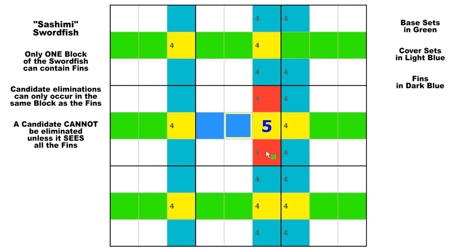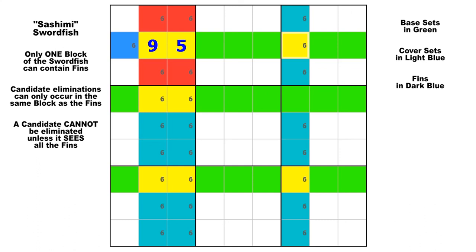Now let me show you another rare case. Just like with a finned swordfish, if two of the cover sets lie in one chute and you've got two base candidates missing from one block, this still works as a sashimi swordfish. There can be one fin in row 2, column 1 and up to four eliminations in this case. The four candidate 6s in the red colored cells would be false because if the fin were not there, this would be a naked single over in row 2, column 7, and you'd be left with an X-wing. And if the 6 in the dark blue cell were true, all the other 6s in block 1 would be false.